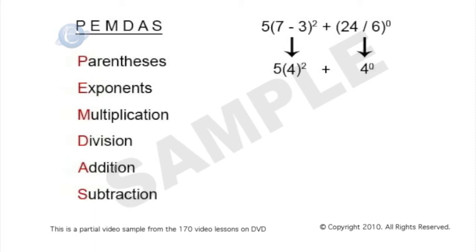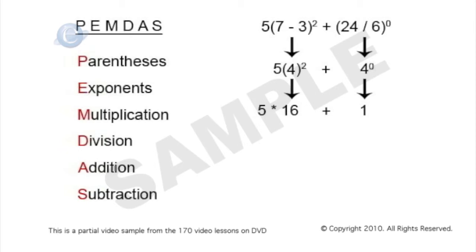Next step is exponents. We have 4 squared. 4 squared is 4 times 4, which is 16, so I now have 5 times 16. Any number raised to the 0 power is 1, so 4 raised to the 0 power becomes 1. That gives us 5 times 16 plus 1.